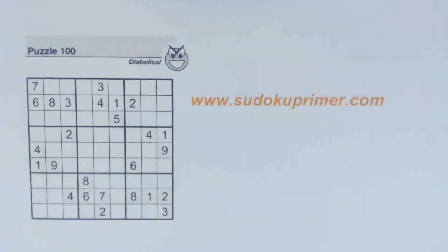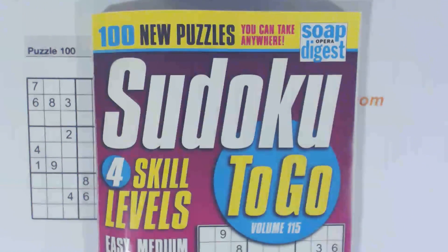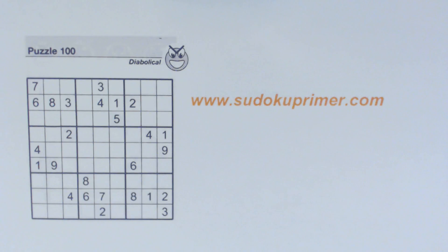In this video we're going to solve a diabolical puzzle. This is Puzzle 100 from Sudoku2Go, Volume 115 by SoapOperDigest. We're going to use Sudoku techniques to solve this diabolical puzzle, and it's also going to be a pop quiz.